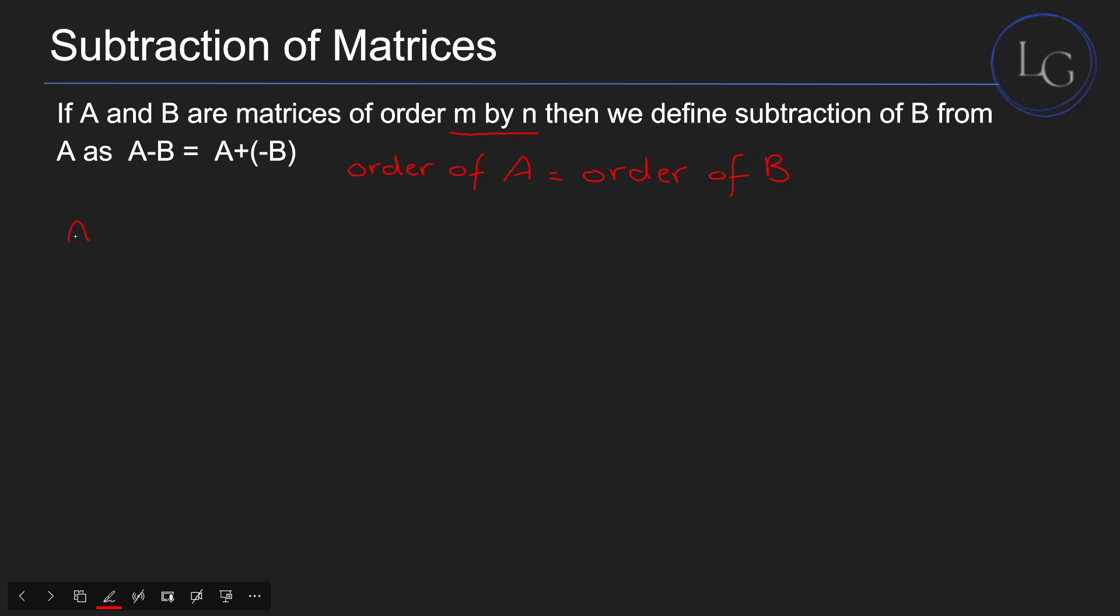If we have matrix A, as we did before, 1, 2, and B is 3, 4, if we have to do B minus A, you'll simply subtract the corresponding entries. The resultant matrix will be subtracting the corresponding entries, so 3 minus 1 and 4 minus 2. This will be the result.